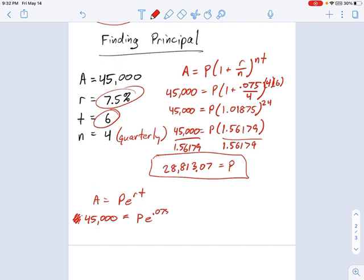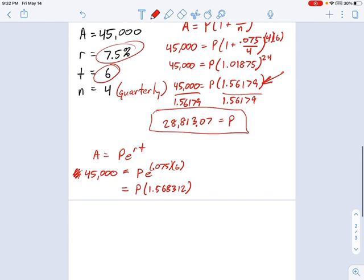So now what we do is we calculate this, and in your calculator, there's an E button, usually along the left side column. You usually have to hit the second button to find it, or the shift button, whatever your calculator function uses. I'm going to type in 0.075 times 6 in my exponent, and what this returns is 1.568312. You'll see that's actually close to the number from earlier, 1.56179. But this one, 1.568312, is a little bigger, indicating that the growth is faster if you use continuously compounding interest.